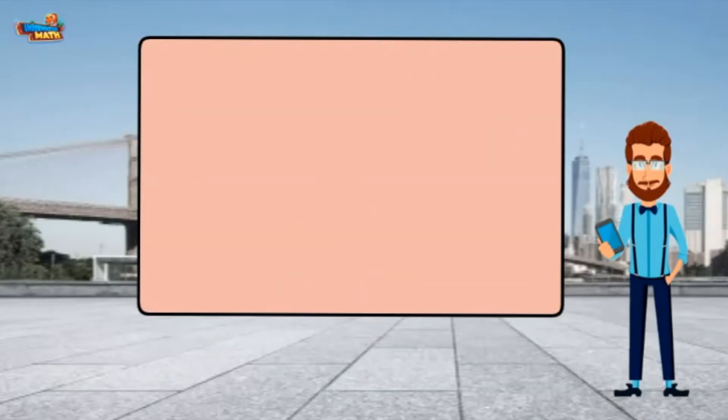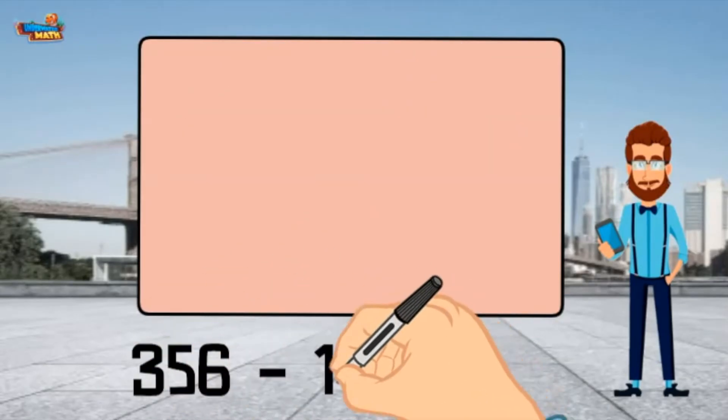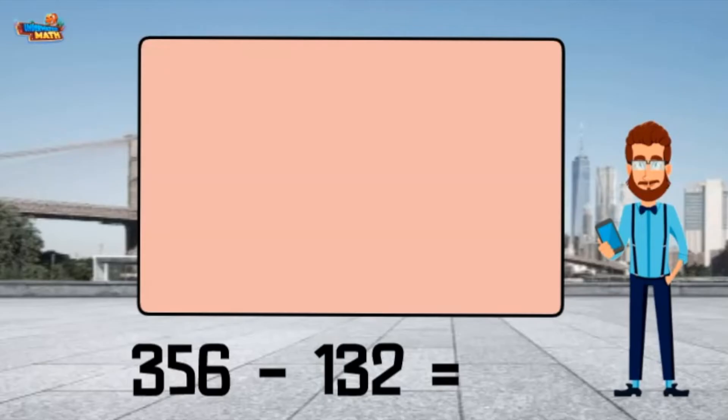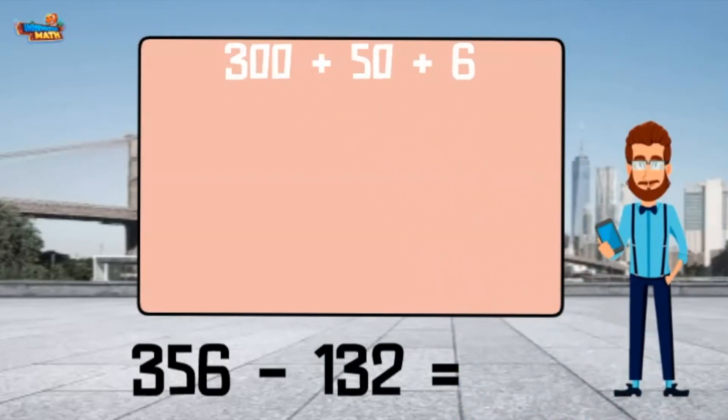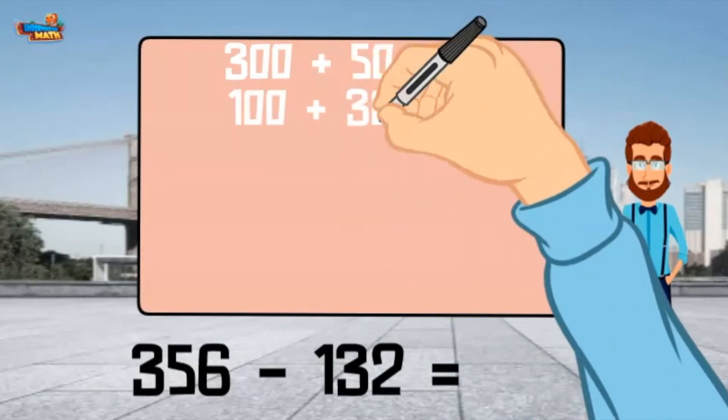I can also subtract using this strategy. 356 minus 132. 356 is equal to 300 plus 50 plus 6. 132 is equal to 100 plus 30 plus 2.